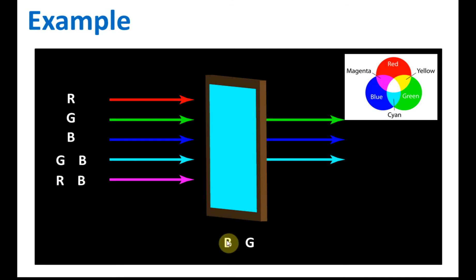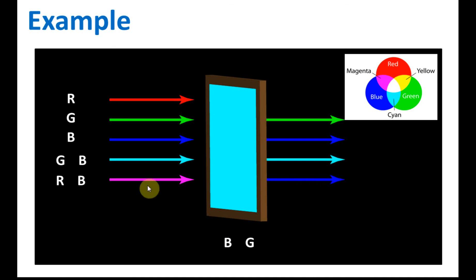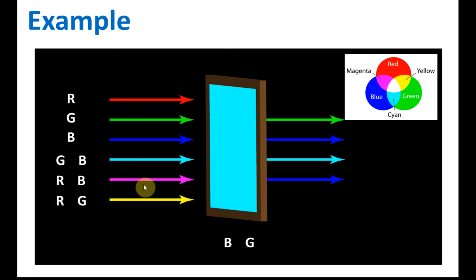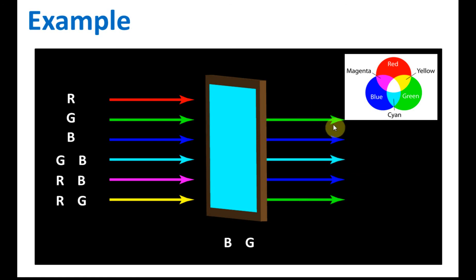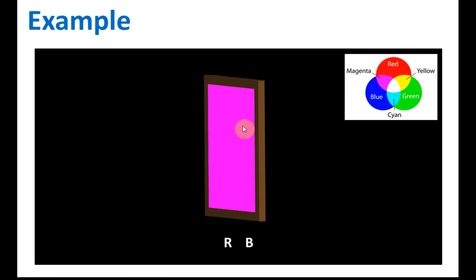What about magenta? Magenta is red and blue — red will be blocked and only blue is allowed to pass through, so the light that comes out is blue. It seems strange — magenta goes in, blue comes out — but that's because the red light is blocked. For yellow — yellow is red and green — the red will be blocked, only green is allowed to come out, so the color you will see is green.